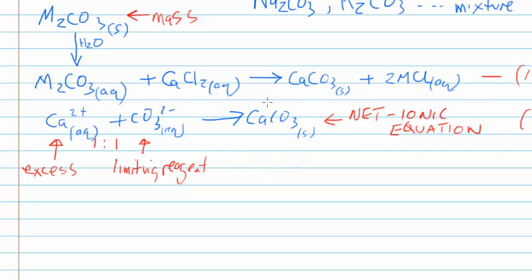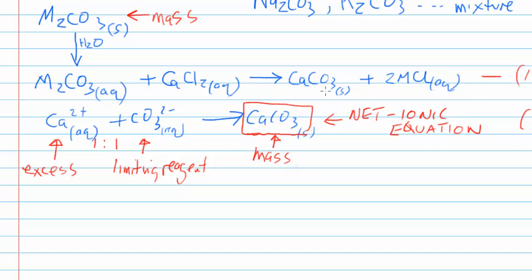Once the calcium carbonate has been precipitated, the experiment involves filtering it out, washing the precipitate, and then drying it. All of those experimental details we'll get to during the course of the lab. Once the calcium carbonate has been obtained, cleaned up, and dried, one of the very last steps in this experiment is to determine the mass of the calcium carbonate — you'll weigh it on an analytical balance. At the end of the experiment, you will have a known mass of a known carbonate — calcium carbonate — whereas at the beginning you started with a known mass of an unknown carbonate.